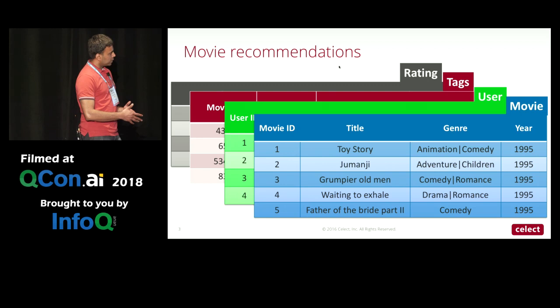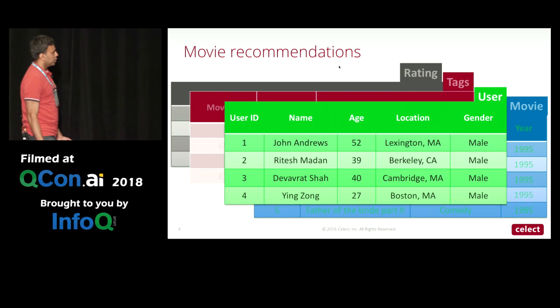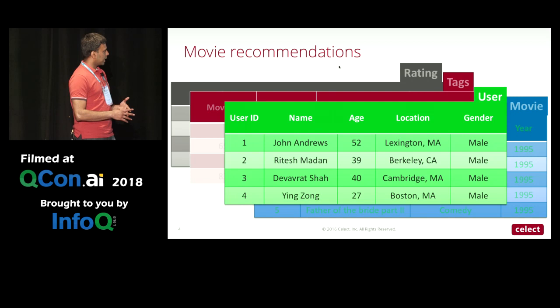The movies sheet has all kinds of features of the movies in our dataset — title, genre, and the year in which it was produced. The users sheet is similar: it identifies each user with an ID and gives their name, age, location, and gender.